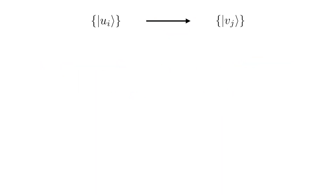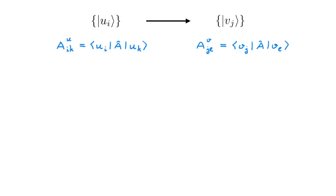Now that we know how to transform the representation of states from one basis u to another basis v and vice versa, the next question is how do we transform the representation of operators between bases? We know that operators are represented by the corresponding matrix elements, so we start by writing the matrix elements of operator A in the u basis, and we also write the matrix elements of the same operator A in the v basis. I have added superscripts u and v to keep track of which basis we're writing the operator in. The transformation question for operators becomes: given the matrix element A_ik in the u basis, how do I find A_jl in the v basis?